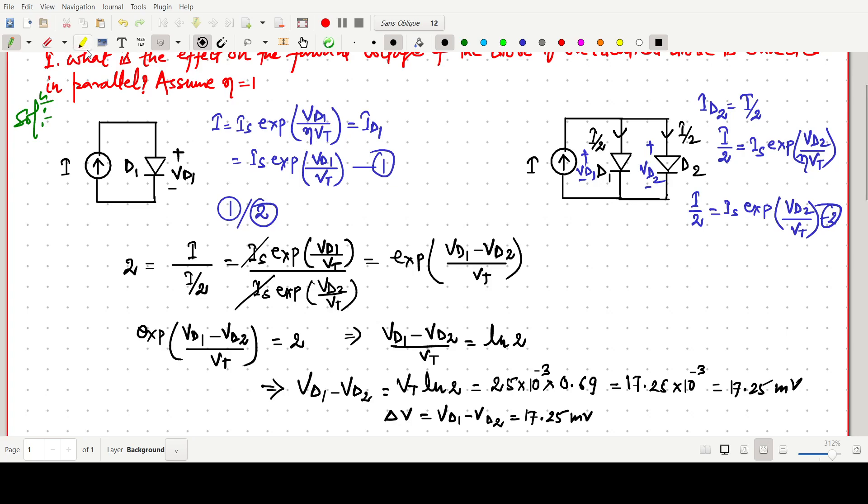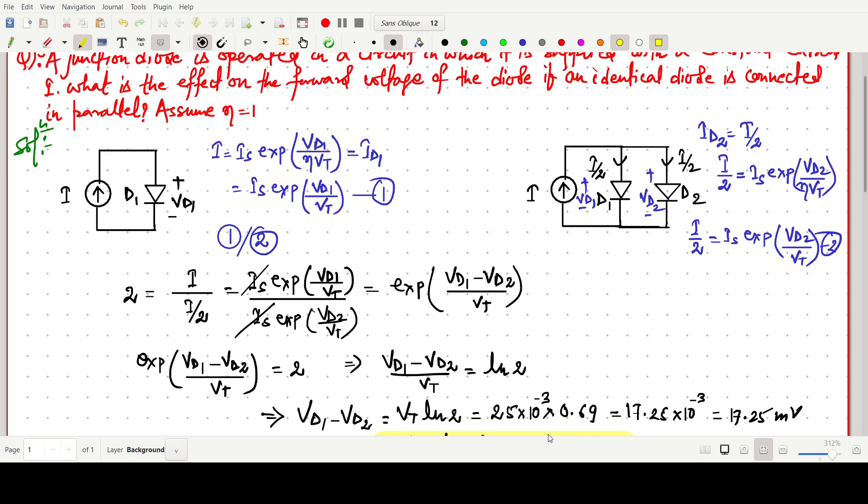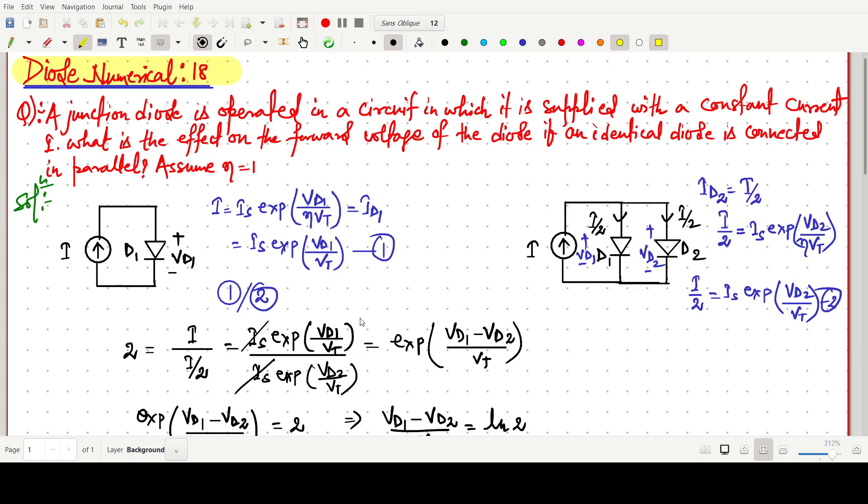So the change in the voltage will be VD1 minus VD2 equals to 17.25 millivolt. This is all about this simple question. We have already found the change in the voltage. The change in voltage will be 17.25 millivolt. This question is easy, but we have to be very careful about the simple diode equation. I equals to Is exp VD1 by eta VT minus 1 we have neglected.